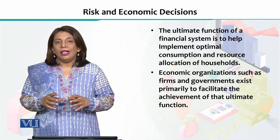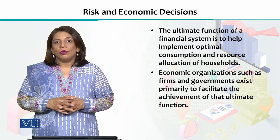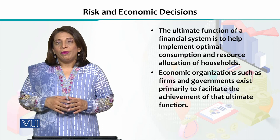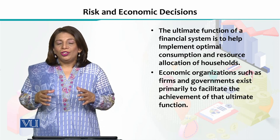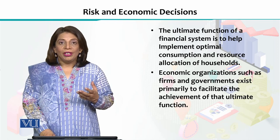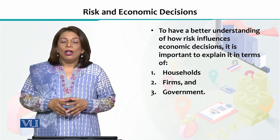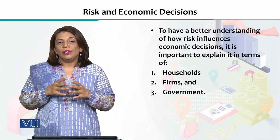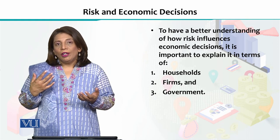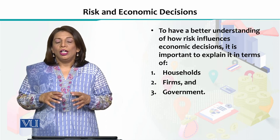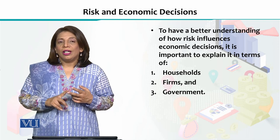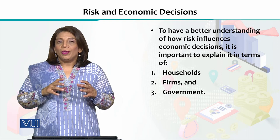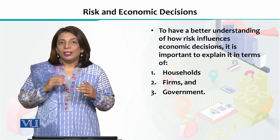Wherever you look at the role of institutions, the role of government, or the role of households — whether they are working with resource allocation, making decisions about consumption, investment, saving, or risk — this is something important to note. In order to have a better understanding of how economic decisions are made by these three important participants of the economy, and to have a comprehensive understanding of the risks associated with different types of economic decisions, we have to look at how those decisions are affected by the risks associated with each of these three participants.